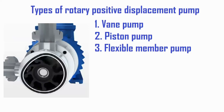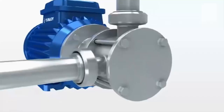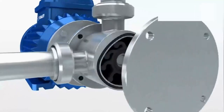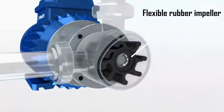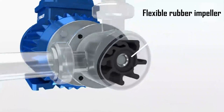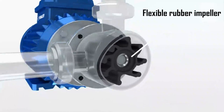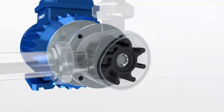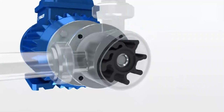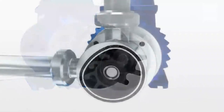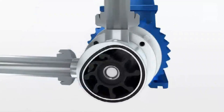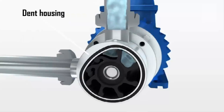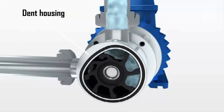The third type is the rotary flexible member pump. A flexible impeller pump is a type of pump design consisting of a circular rubber impeller with several flexible rubber vanes mounted in a casing. The sucked fluid is pressed from the fluid inlet side to the fluid discharge side using the pump casing, which is dented while the rubber impeller rotates.